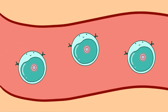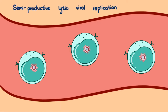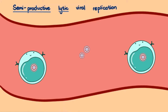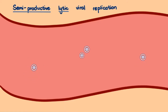What happens in B cells is known as a semi-productive lytic viral replication — semi-productive because only a few new virions are created, also described in some references as restrictive-productive. The replication is lytic because B cells lyse and die. With all these B cells dying, there is a decrease in overall antibody production, and the bird suffers from immunosuppression.